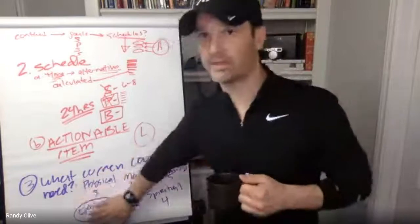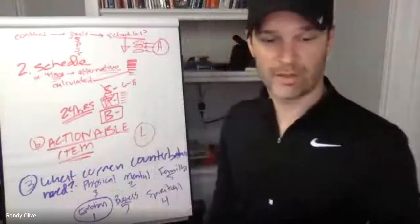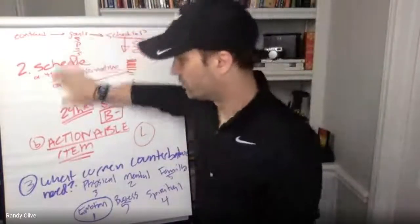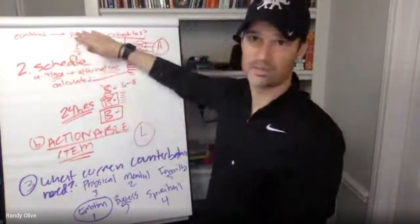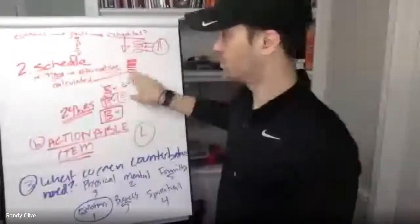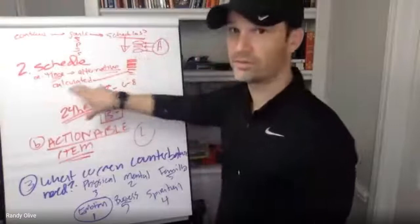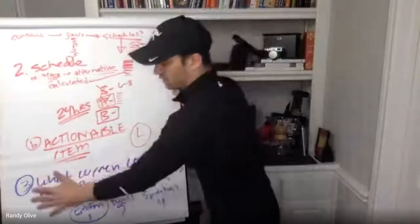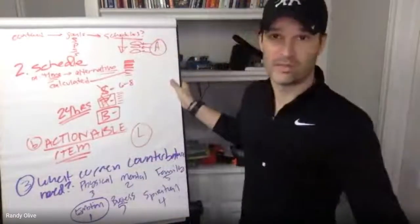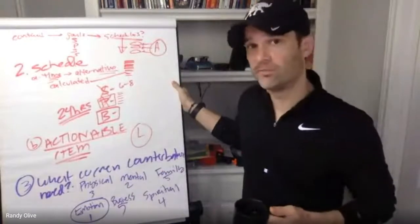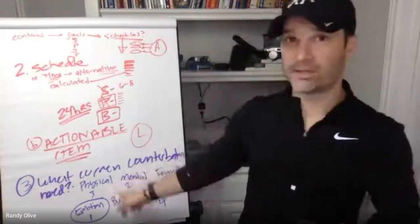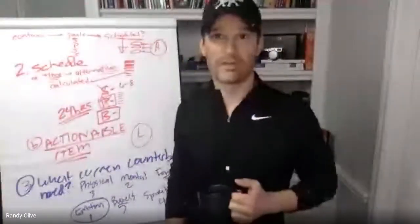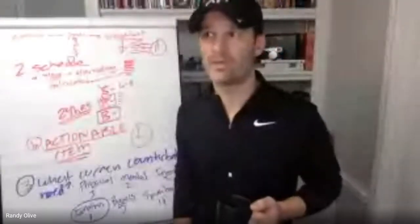Whatever it looks like — what am I doing right now to make sure these things are in balance? Because if they're not in balance, we're going to have bigger issues than just business. So the first thing: filter content through your goals — does it make sense, is it replacing strategies? Then look at my schedule: do I have the time, am I adhering to a schedule, and can I calculate where I'll pull this information from and ensure actionable items go into place?